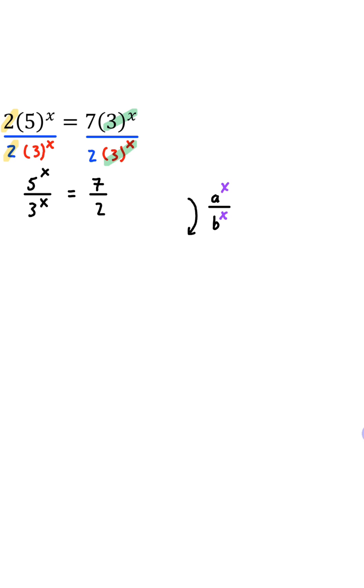Now we're going to use the exponent property: a to the power of x divided by b to the power of x is equivalent to a divided by b to the power of x. So 5 to the power of x divided by 3 to the power of x is 5 over 3, the whole thing to the power of x. And that's equal to 7 over 2.